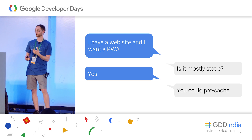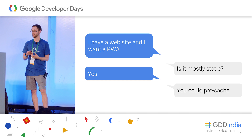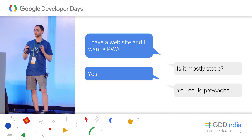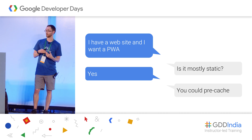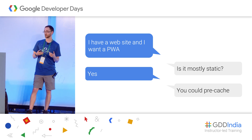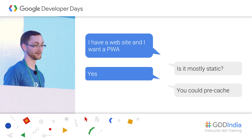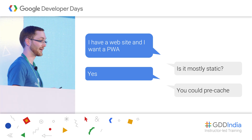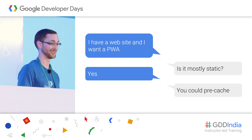In that case, pre-caching is a super powerful strategy you should be using. What pre-caching essentially is: the first time the user visits your site, you pre-cache all of your site's assets on their device. That way, as they navigate through your app, or if they reload it later, all your assets are already local — it's really fast, doesn't need the network, and works offline.